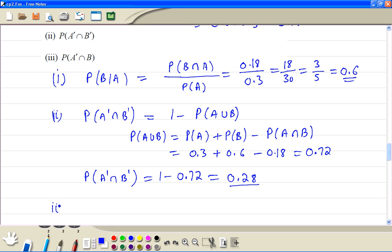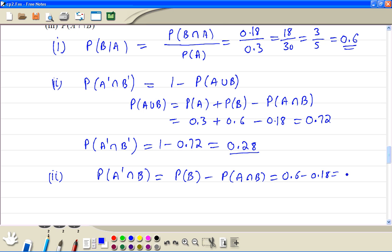Part 3, probability of not A intersection with B. This is the probability of B which is 0.6 minus 0.18. So we get the answer to be 0.42.